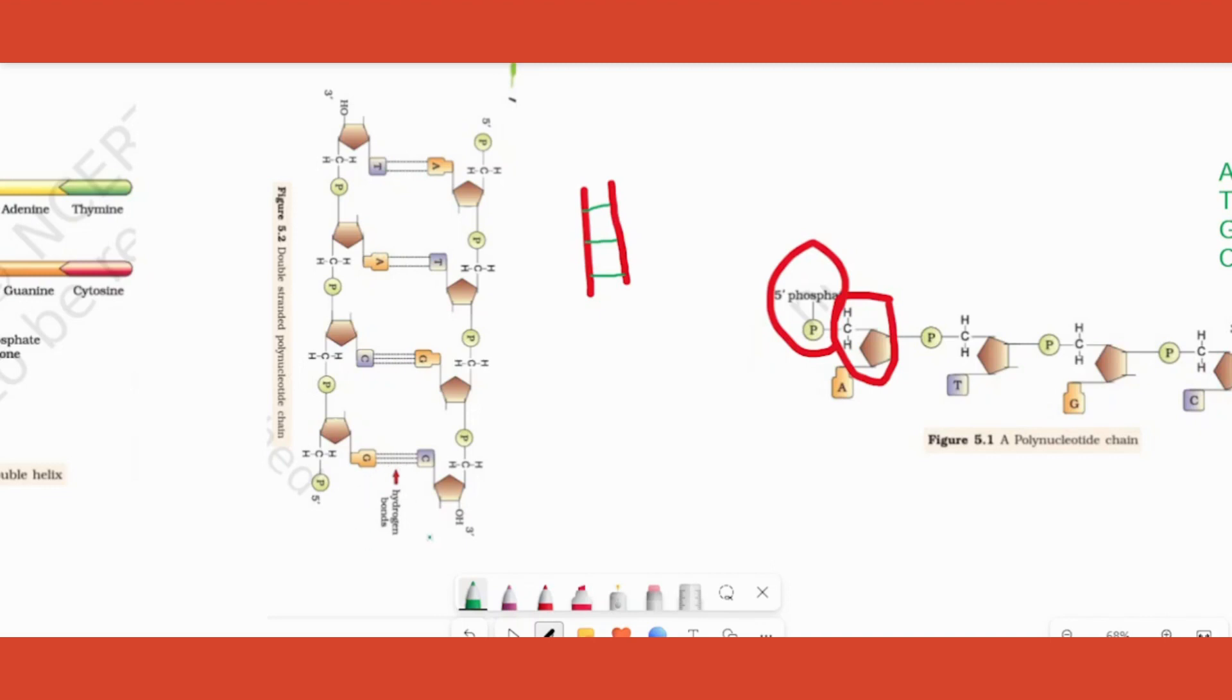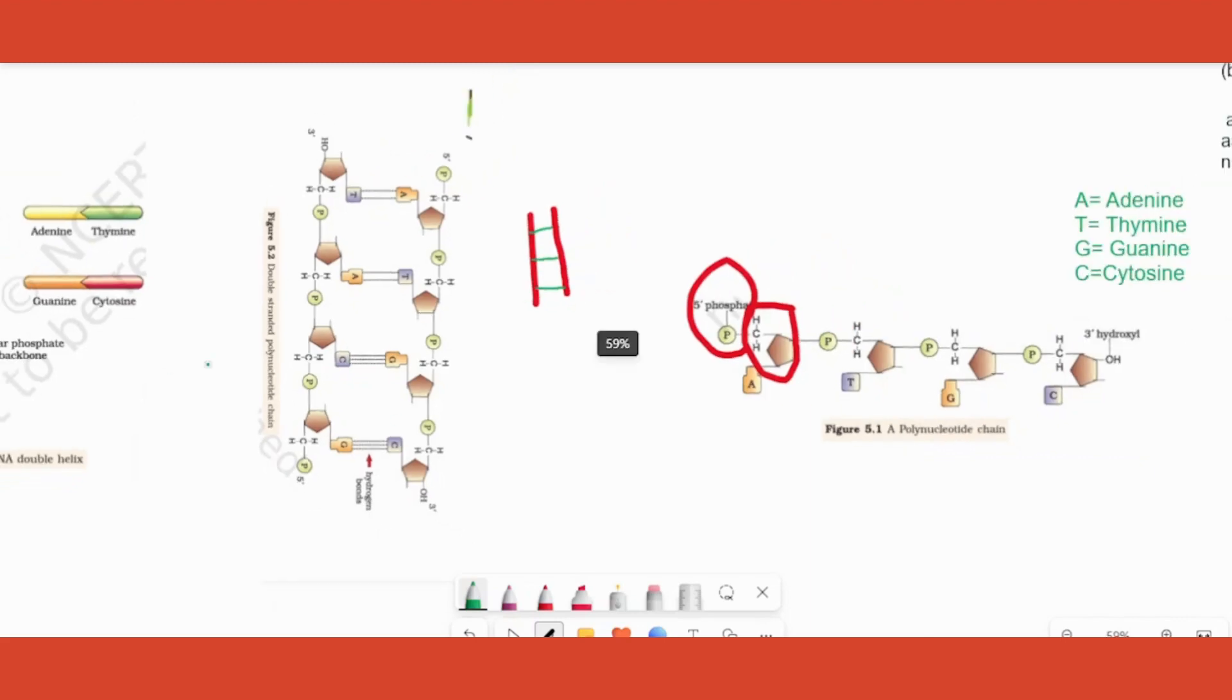These chemical bonds are nothing but hydrogen bonds in this case and if you notice the bonding between A and T is a double hydrogen bond and G and C is a triple hydrogen bond. Now moving back, so till now I hope it is clear the nucleotide chain forms the DNA. Many nucleotide chains, two nucleotide chains running in the opposite direction. Let's understand that part, that is opposite direction.